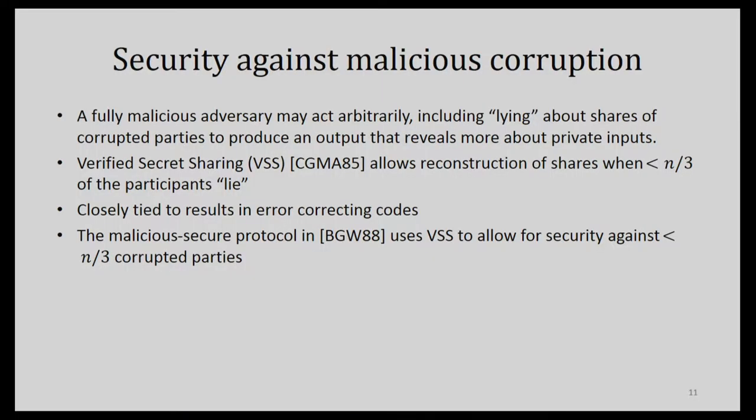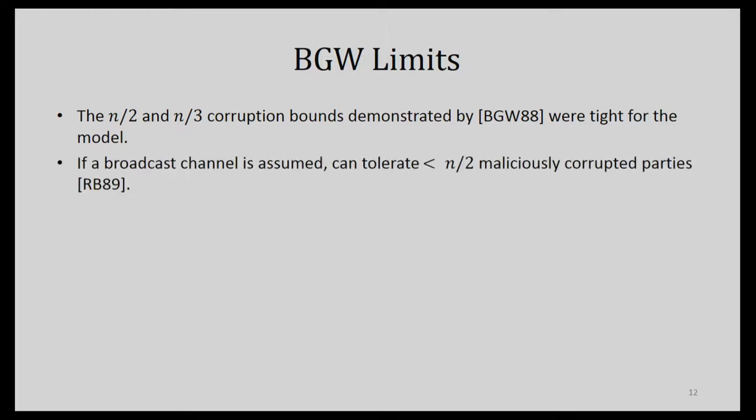The secure protocol against malicious adversaries allows security for fewer than n over three corrupted parties. This was one of the early big results — it showed that given bounds on how many collaborators are bad guys, you can actually compute correctly. In the original paper, these limits of n over two in the passive model and n over three in the malicious model were tight for the assumptions made — you actually cannot do any better than that. Of course, there are many different models and assumptions you can make.